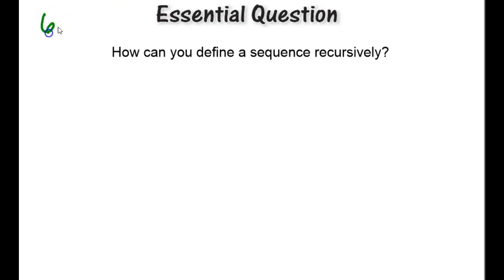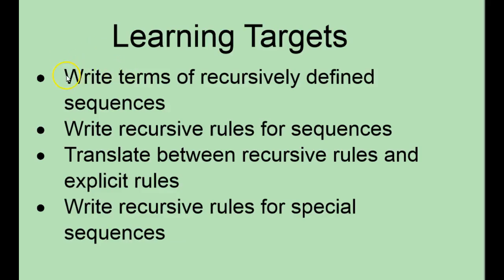Here we're going to look at chapter 6.7. Our essential question is: how can you define a sequence recursively? We haven't looked at any recursive formulas yet, so that's what we're going to do in this section. Our learning targets: first, we're going to write the terms of recursively defined sequences. Then we're going to write recursive rules for sequences. Our third learning target is to translate between recursive and explicit — we've seen explicit rules for both arithmetic and geometric sequences, and now we're going to go back and forth between these new recursive rules and the ones we've already seen.